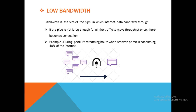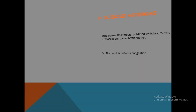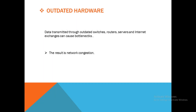The next cause is low bandwidth. Bandwidth is the size of the pipe through which internet data can travel. If the pipe is not large enough for all the traffic to move through at once, congestion occurs. The last cause is outdated hardware. Data transmitted through outdated switches, routers, servers, and internet exchanges can cause bottlenecks, resulting in network congestion.